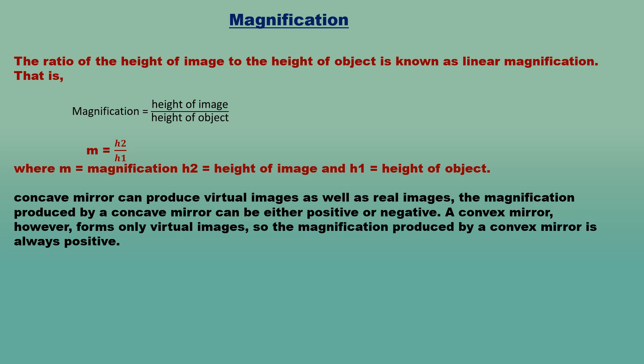Magnification: The size of image formed by a spherical mirror depends on the position of the object. The image can be bigger than, equal to, or smaller than the object. The size of the image relative to the object is given by the linear magnification — the ratio of the height of image (H₂) to the height of object (H₁). In ray diagrams the object is always placed above the principal axis, so the height H₁ of the object will always be positive.